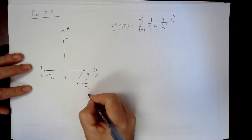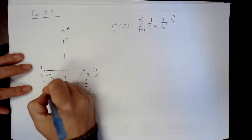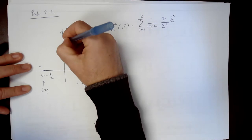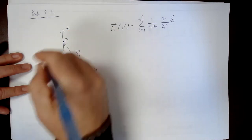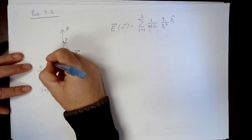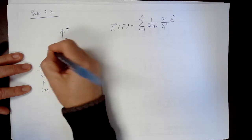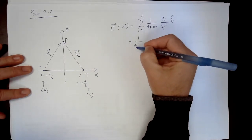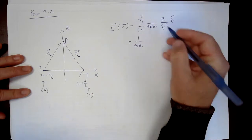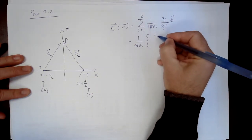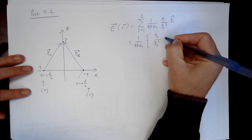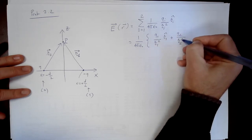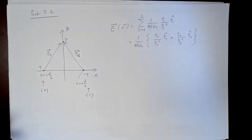And then I have 1 over 4 pi epsilon naught qi over script ri squared ri hat. So now, I have two. If I call this charge number 1, and this one charge number 2, i equals 1 and 2, right?